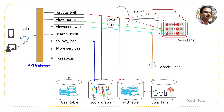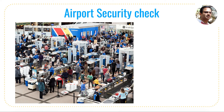The API gateway decides which services to call and gives the right response to the customers. I want to correlate the airport security check with the API gateway — it does the same operations. If you look at the security check at an airport, what it does is it validates and authenticates the customer before they go into the airport, so it does a security check.